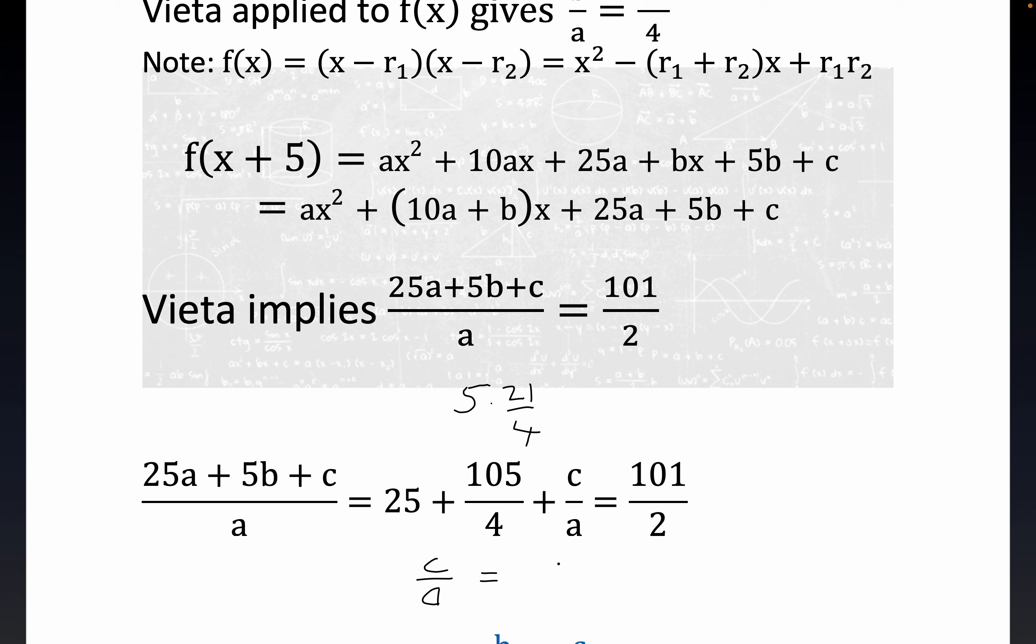So you would get everything's going to be over four, right? So you would have 202 over four minus 100 over four. 25 is the same as 100 over four and then minus 105. And of course, folks, this is all over four.